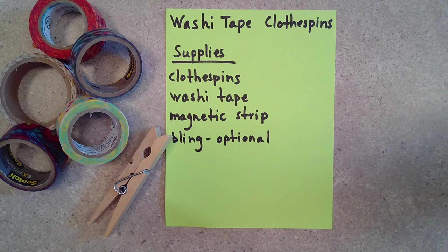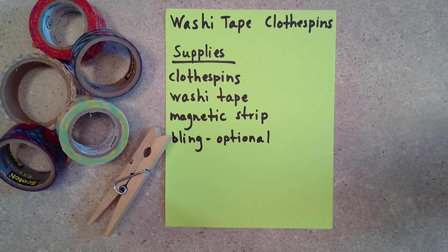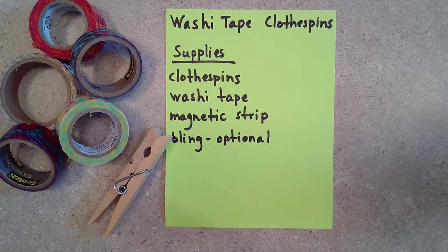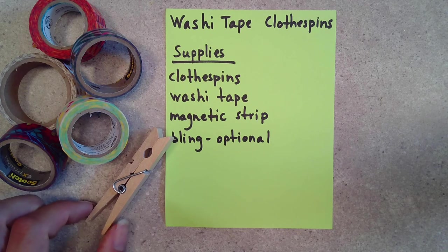The first thing I'm going to show you how to do is make washi tape clothespins. I have the supply list right here. You're going to need clothespins, washi tape, magnetic strip, and the bling is optional. And this first craft is very easy, very fun.